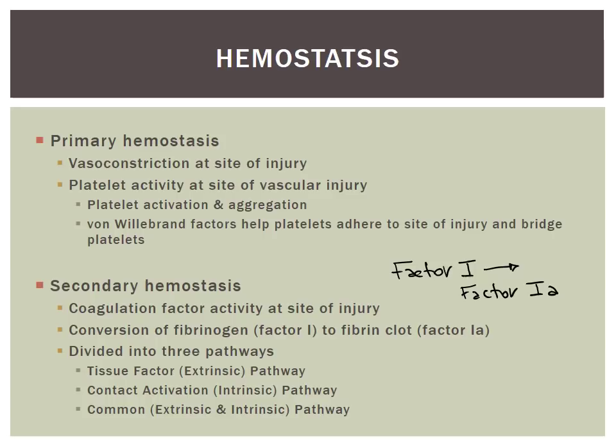Hemostasis is divided into three pathways: the extrinsic, the intrinsic, and the common pathway. The extrinsic pathway can also be referred to as the tissue factor pathway. The intrinsic pathway can also be referred to as the contact activation pathway. The common pathway is sometimes referred to as the extrinsic and intrinsic pathway combined. These pathways start off separately and then meet in a common pathway.